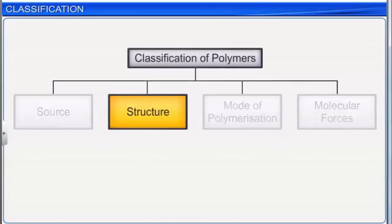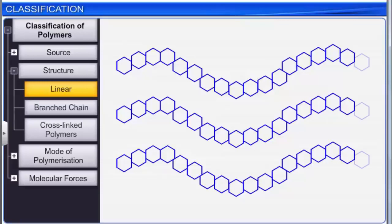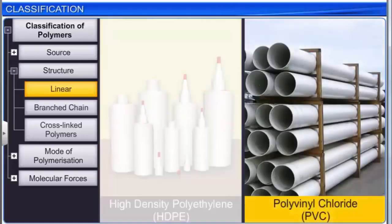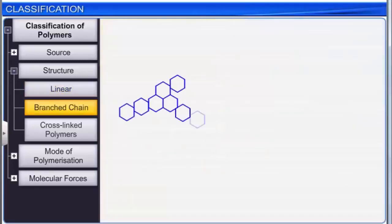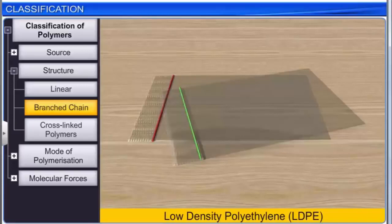On the basis of their structure, polymers are classified into three types: linear, branched chain, and cross-linked polymers. Linear polymers are made from long straight chains. Examples are high-density polyethylene (HDPE) and polyvinyl chloride (PVC). Branched chain polymers contain linear chains that have some branches. One common example is low-density polyethylene (LDPE).